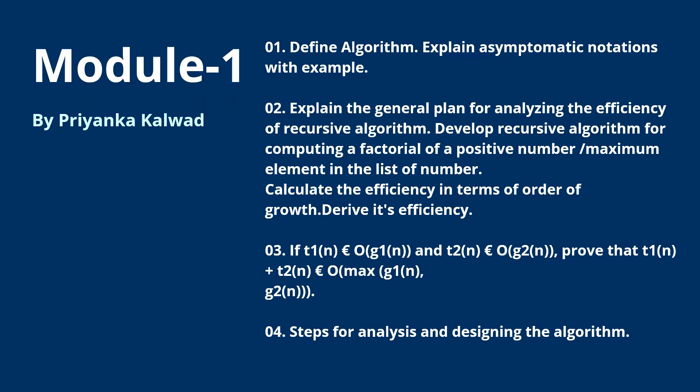From Module 1, I have chosen four questions. The first question is: define algorithm and explain asymptotic notations with examples. The asymptotic notations are Big Theta, Big Omega, and so on.